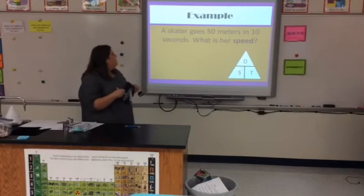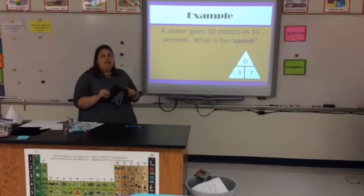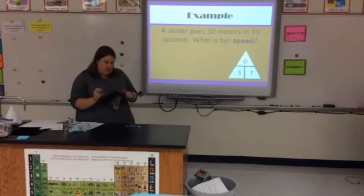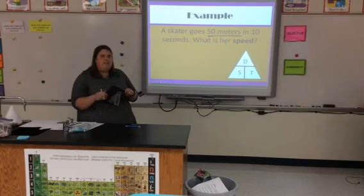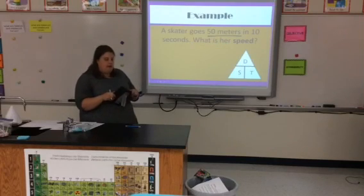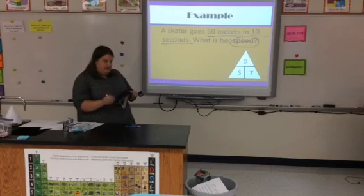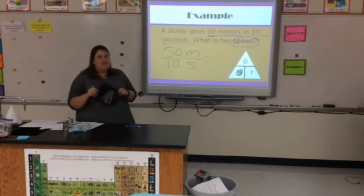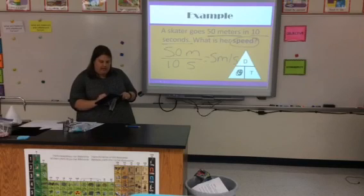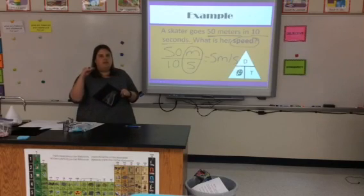Let's look at one more problem — a word problem. I have to determine what information is given by looking at units of measurement. I see 50 meters: meters is a measurement for distance, so I know I have distance. I see 10 seconds: that is a measurement for time. The problem tells me I'm looking for speed. I put 50 meters on top and 10 seconds on the bottom. When I divide, I get 5 meters per second.